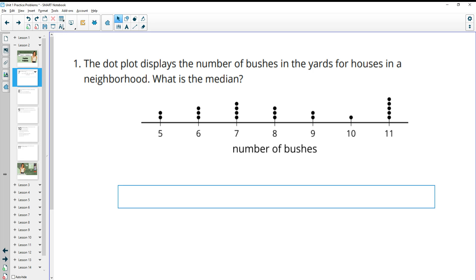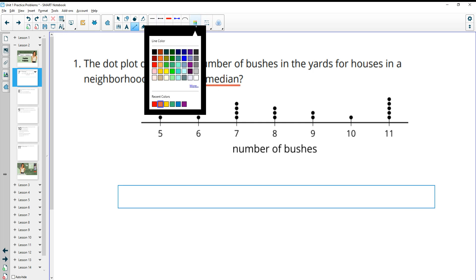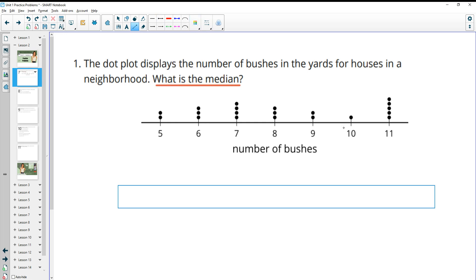Number one asks us or shows us the dot plot displays the number of bushes in the yards for houses in a neighborhood and it wants us to find what the median is. So the median is going to be the very middle number of the data set when you write it in order from least to greatest.